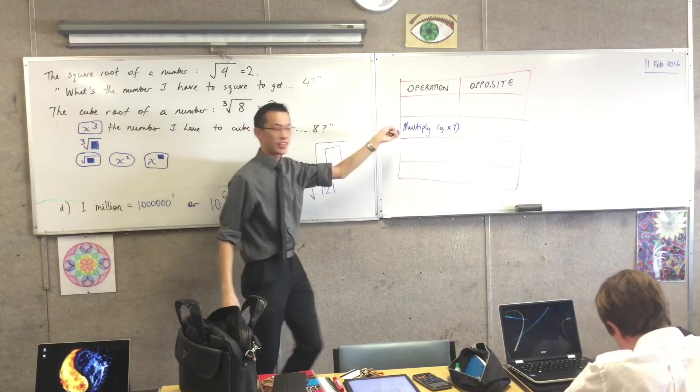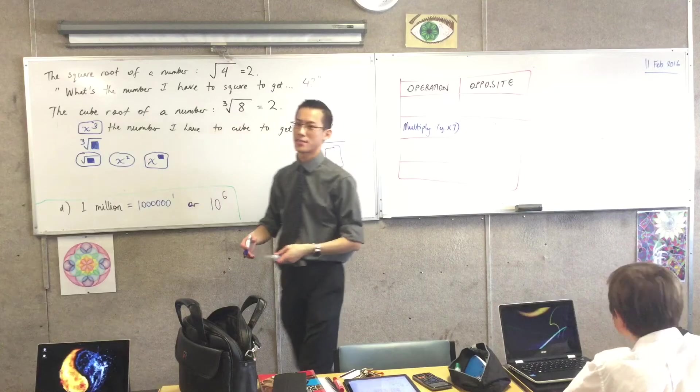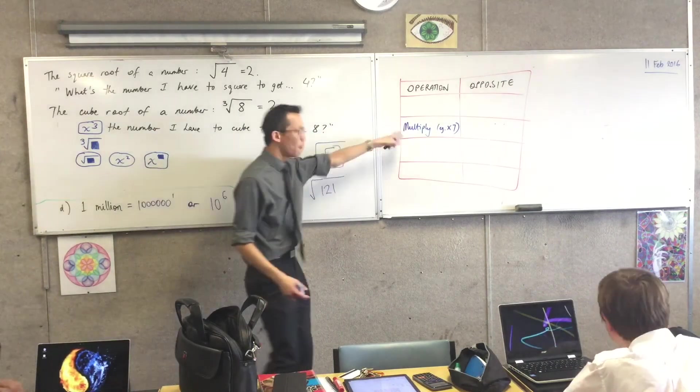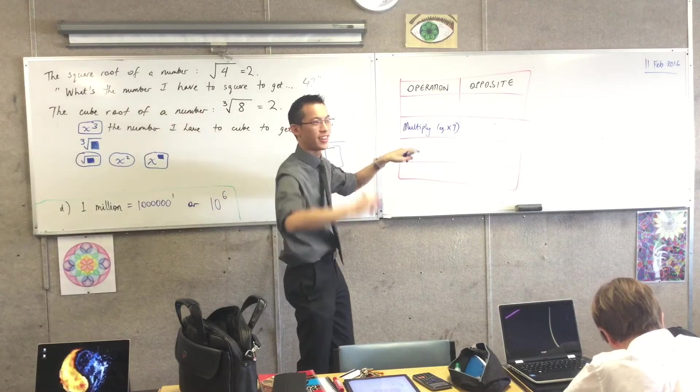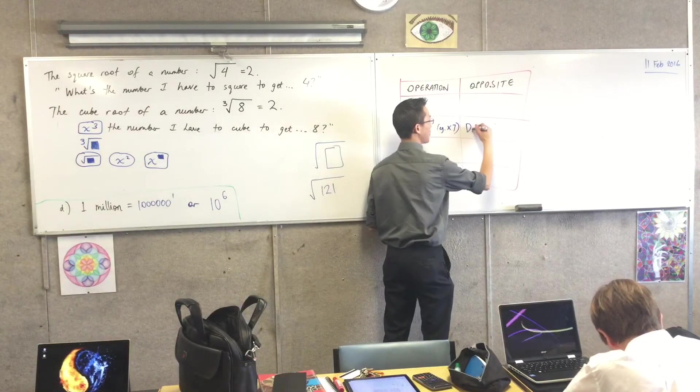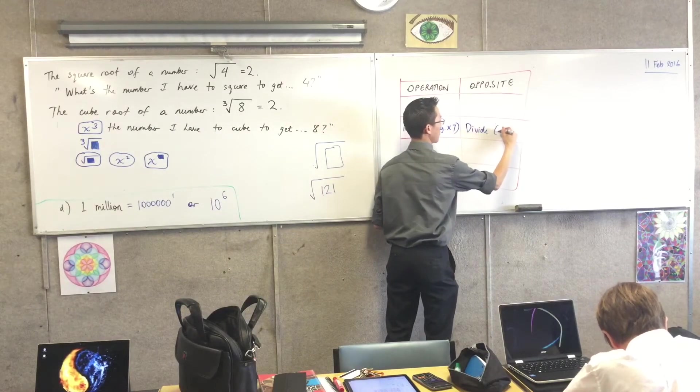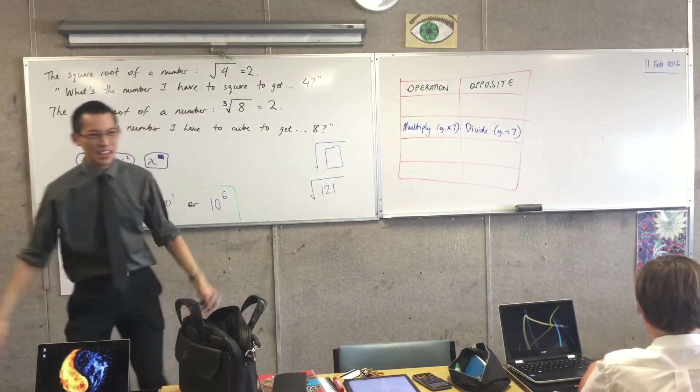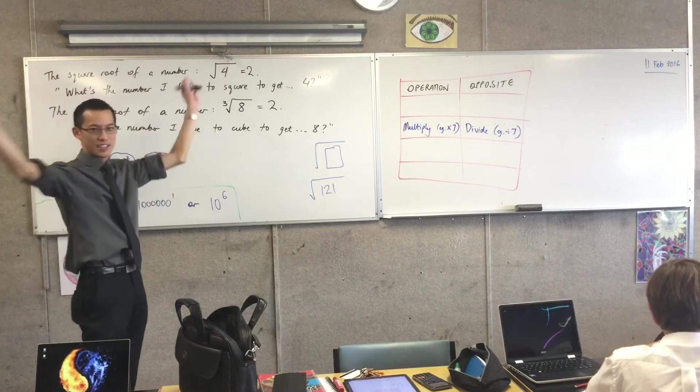Every operation has what we call its opposite. The fancy word is inverse. That will undo the operation. What's the opposite of multiply? Yes, Christian? Division. Division. So, I'm going to write divide over here. So, multiply it by seven. Dividing by seven. They kind of collide with each other and cancel that.